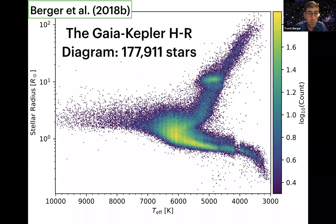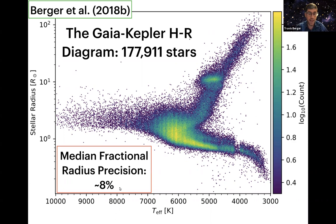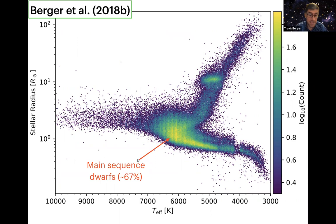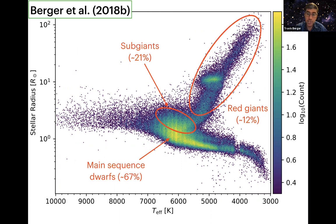Here is what we get with the Gaia-Kepler HR diagram showing about 178,000 stars — a plot of stellar radius versus effective temperature. Thanks to Gaia DR2, this allowed us to get down to median fractional radius precisions of about 8 percent, a factor of three better than before Gaia DR2. With these precise stellar radii, we can classify the percentage of Kepler stars: main sequence dwarfs make up roughly two-thirds, sub-giants about 21 percent, and red giants the final 12 percent.